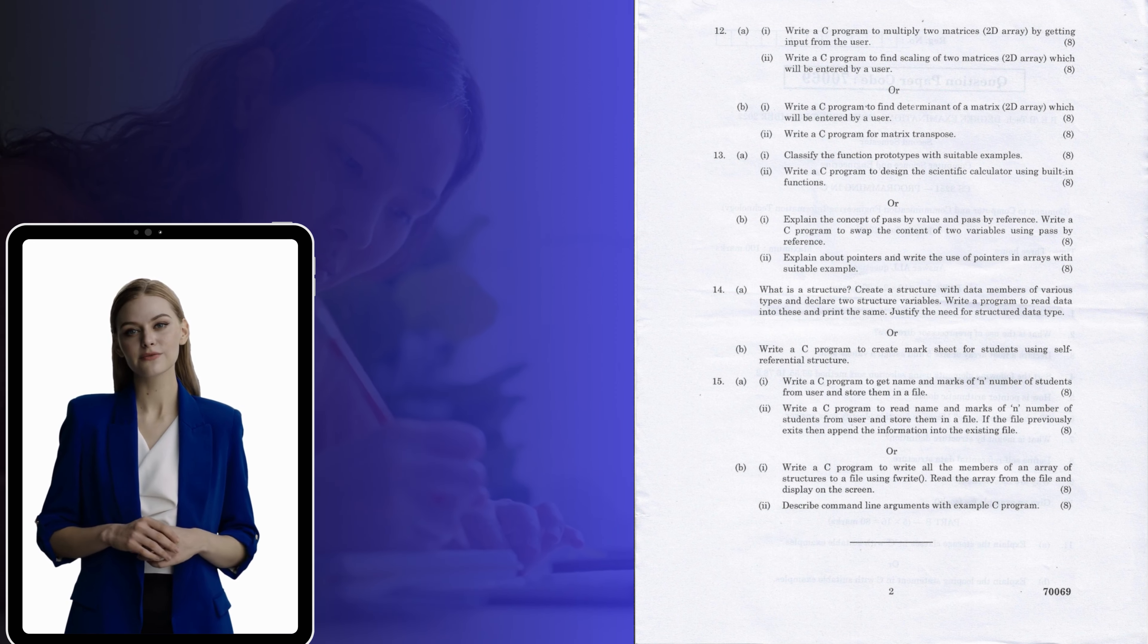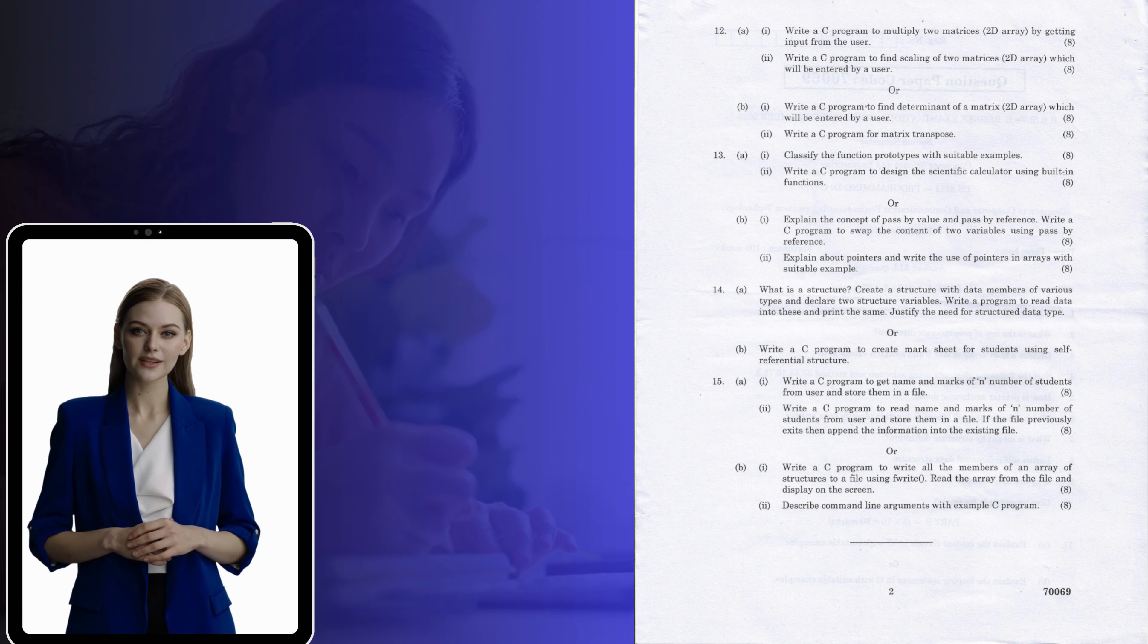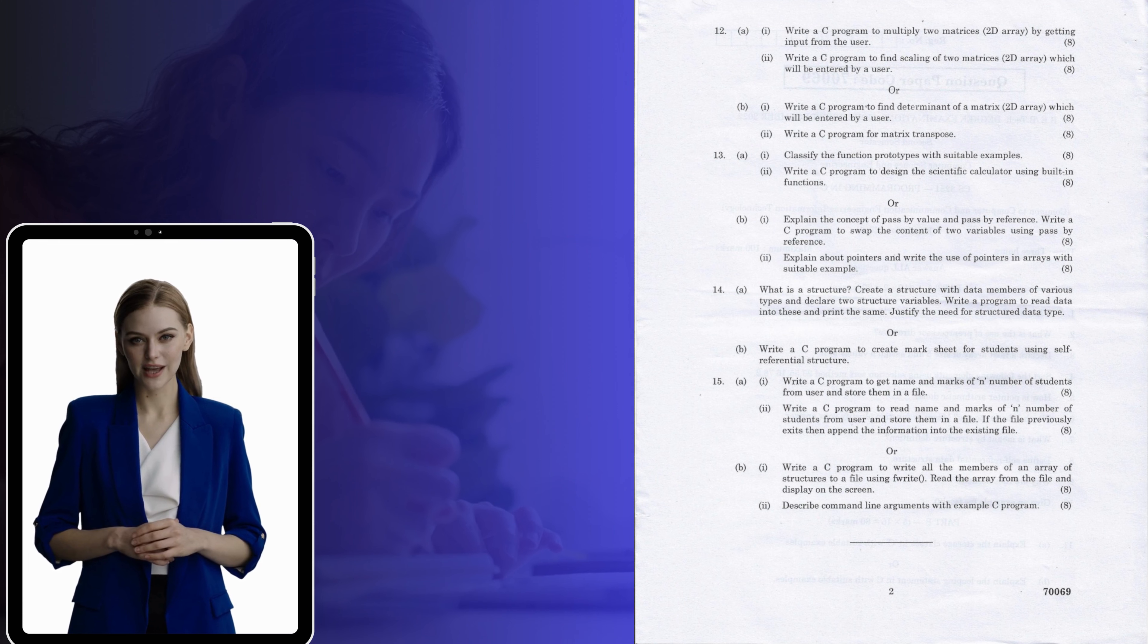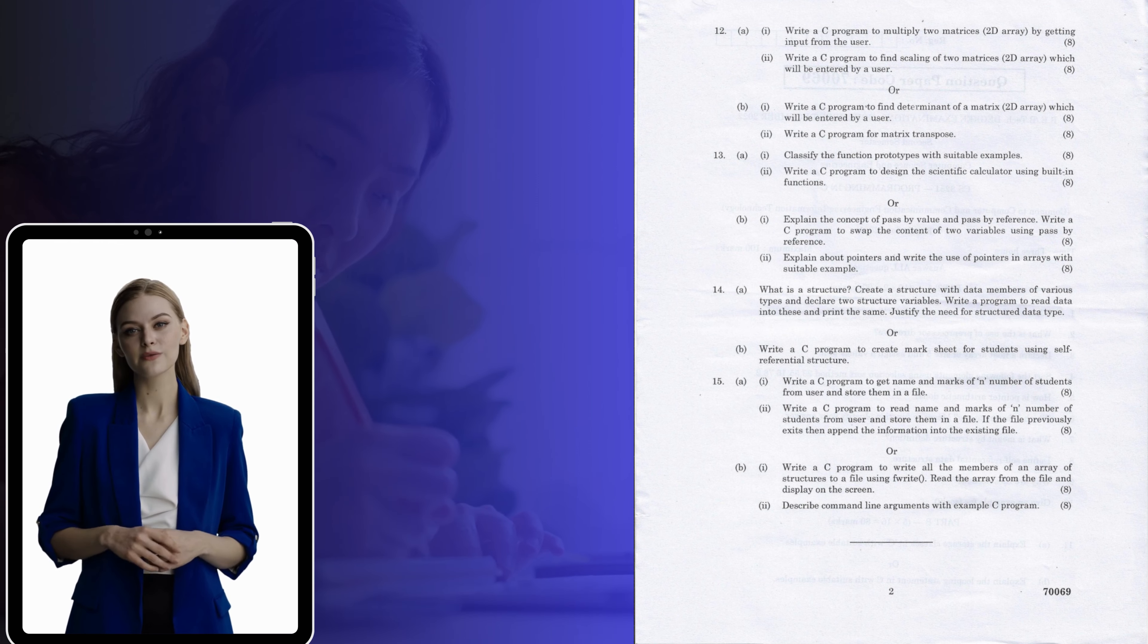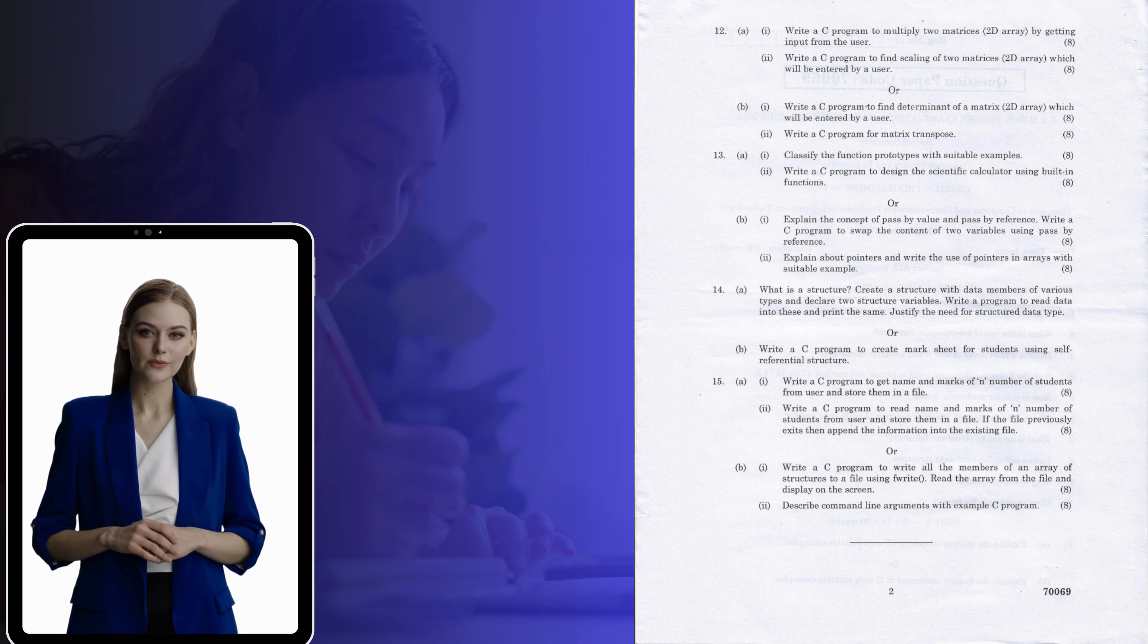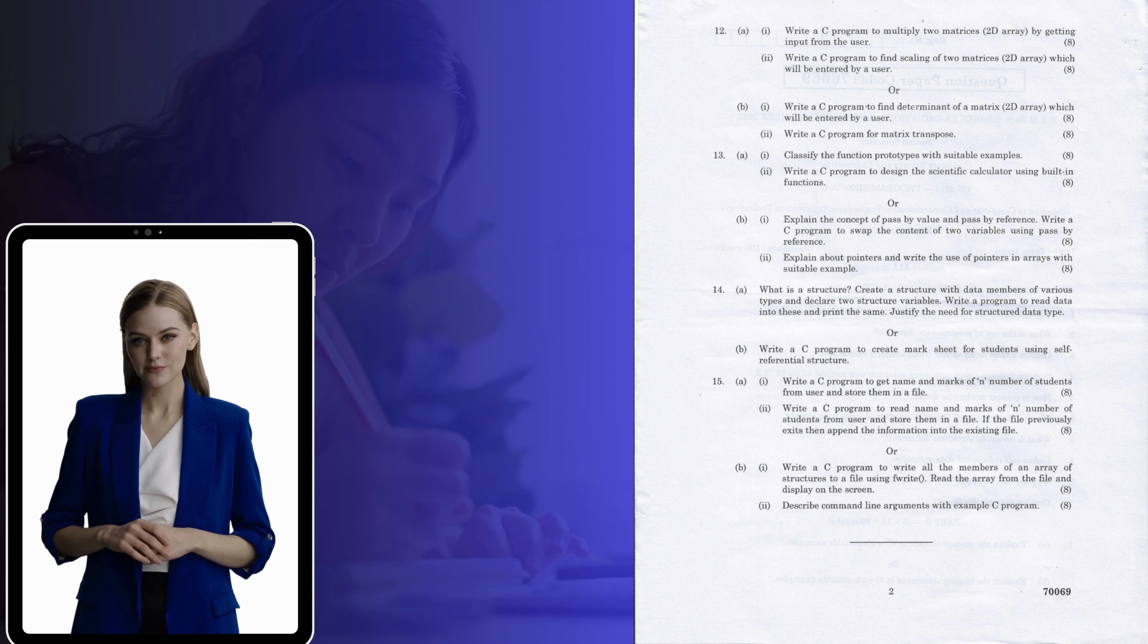13 A. i. Classify the function prototypes with suitable examples. ii. Write a C program to design the scientific calculator using built-in functions. Or B. i. Explain the concept of pass-by-value and pass-by-reference. Write a C program to swap the content of two variables using pass-by-reference. ii. Explain about pointers and write the use of pointers in arrays with suitable example.